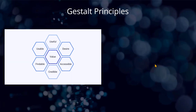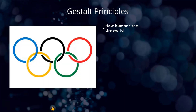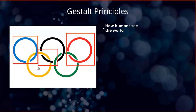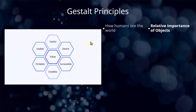So I'm going to introduce some Gestalt principles as we go along. The Gestalt principles are all about how humans see the world. Consider what we're looking at here — most of us will say it's the Olympic rings. But actually, there's not one single complete ring here at all. What the mind has done is bridged those gaps. The rings appear related to each other because they've got proximity. We'll see later how these principles are relevant to our apps.